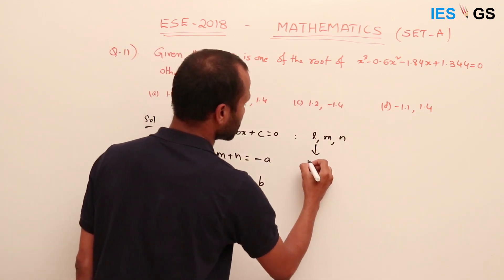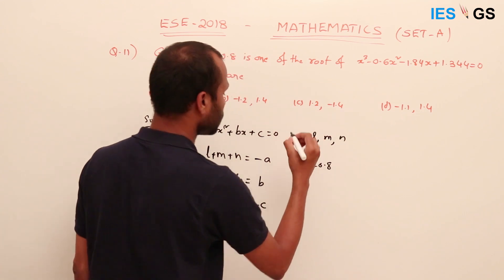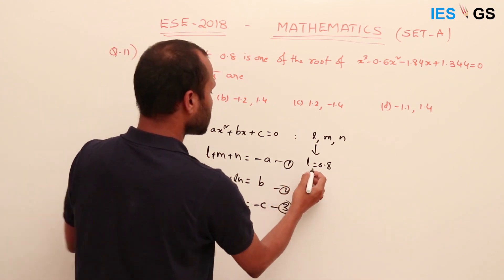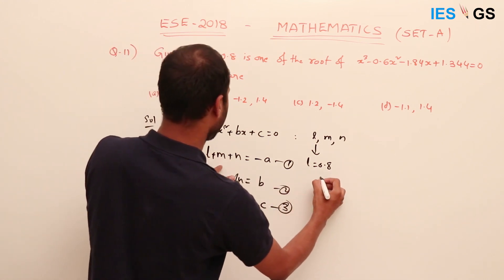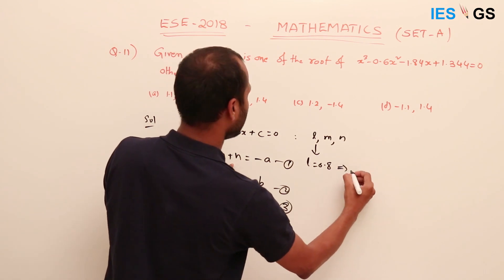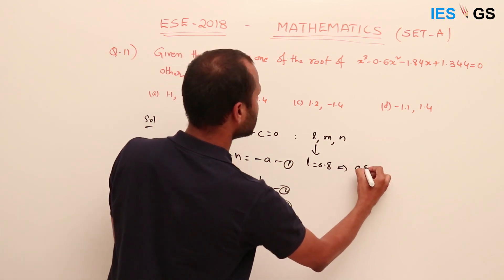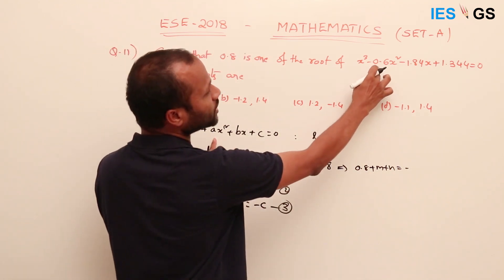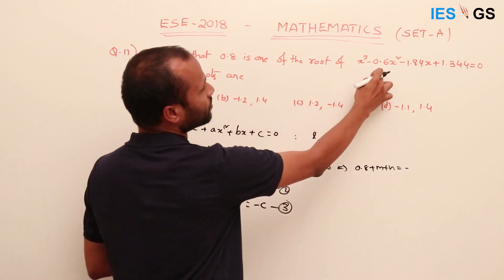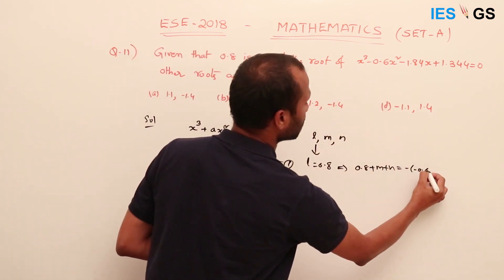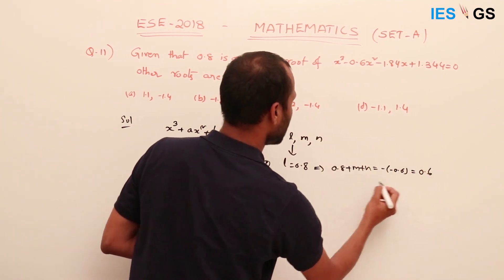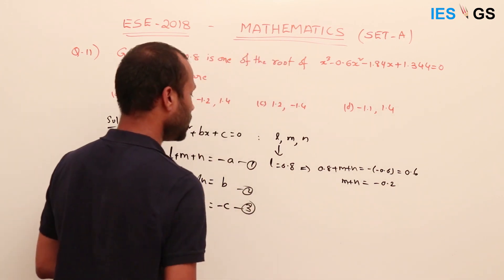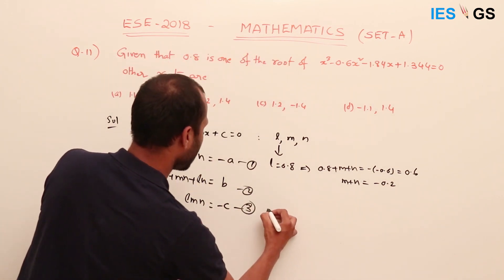Since l equals 0.8 is given, we substitute into the first equation: 0.8 plus m plus n equals minus a. Here a is minus 0.6, so minus of minus 0.6 is plus 0.6. Therefore m plus n equals 0.6 minus 0.8, which gives m plus n equals minus 0.2.